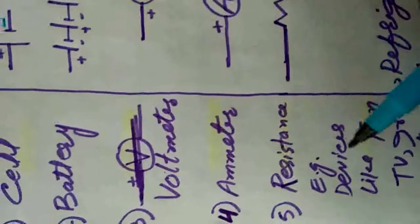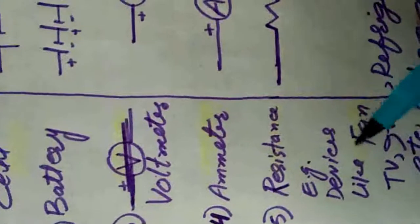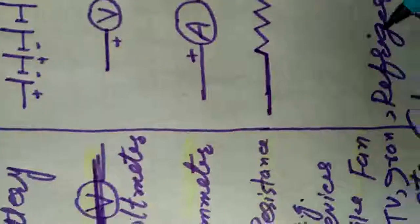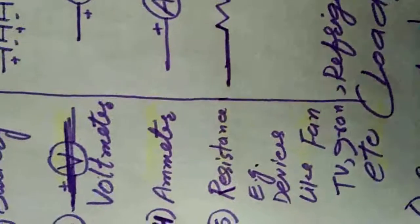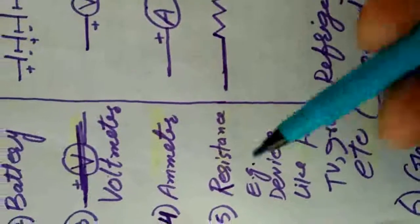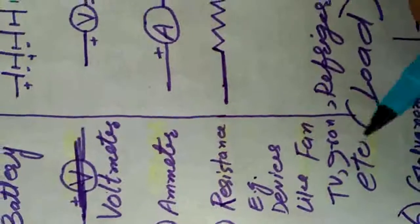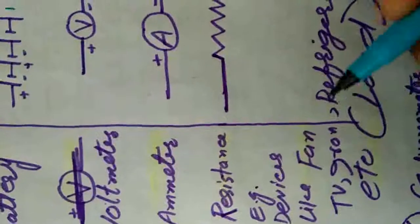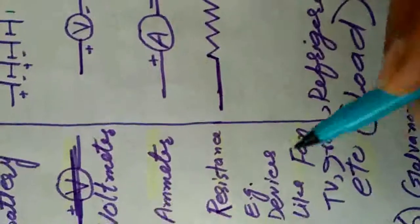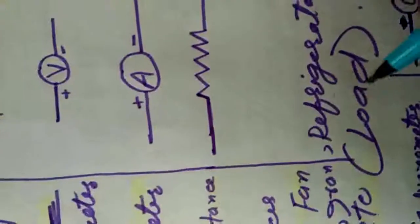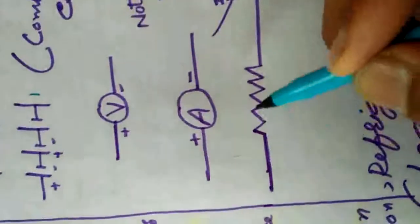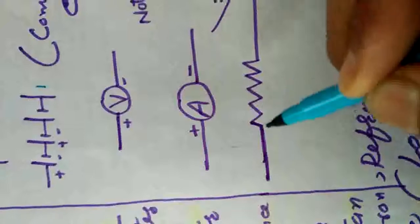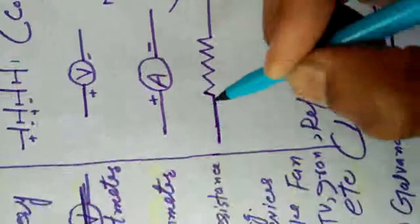The fifth component is resistance. Resistance includes devices like fan, TV, refrigerator, AC, etc. All these are called resistances. From an electronic engineering point of view, we call these devices as load. This resistance is represented by this symbol.